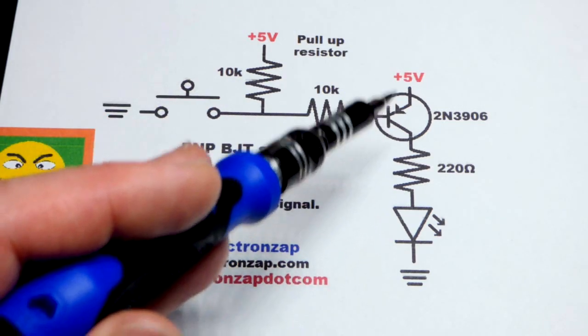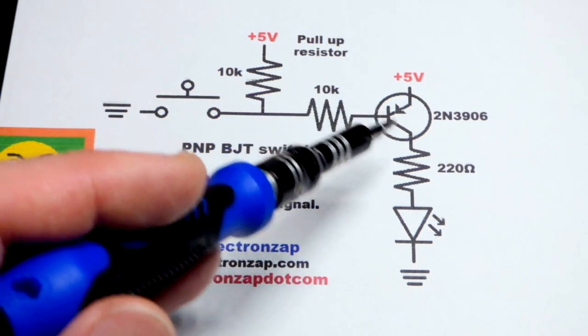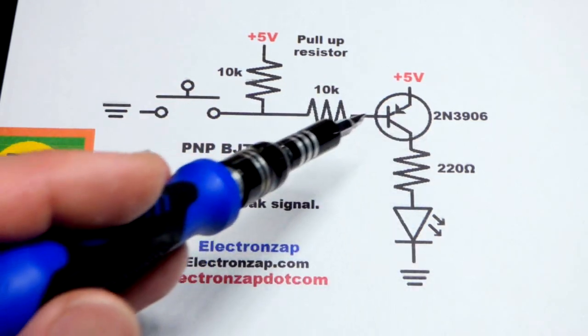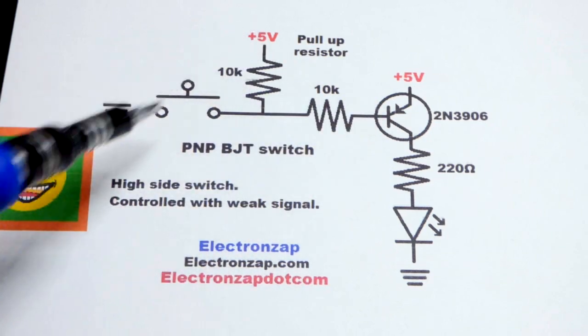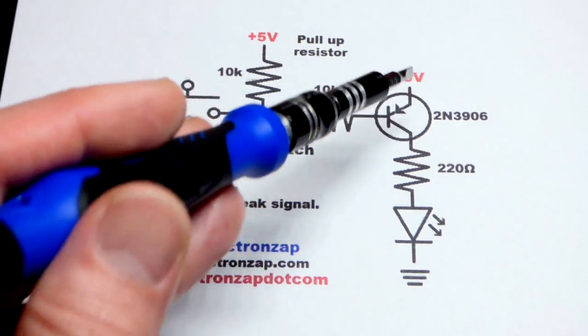Since this is a PNP bipolar junction transistor, the emitter is more positive, then the collector, and the base is usually somewhere in between. So we're going to hold five volts there, five volts there.